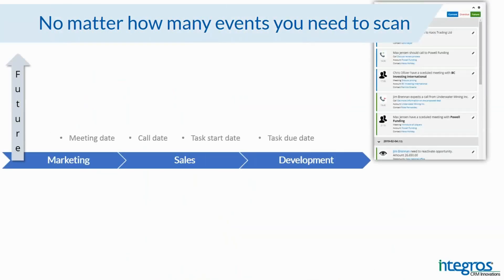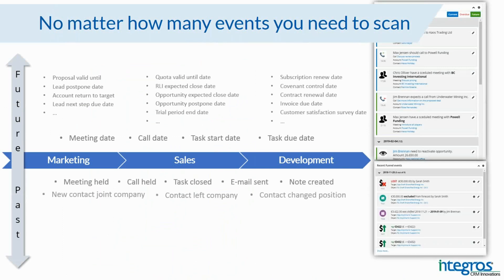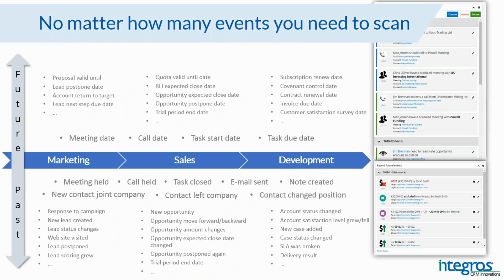This approach provides users with information not only from their own domain but also from contiguous domains they don't belong to. An overview of past events that matter helps save time while getting the whole solid picture of company-to-customer interactions, and from that understanding, to overview the future actions that need to be done regardless of the nature of those actions or the modules they're related to.